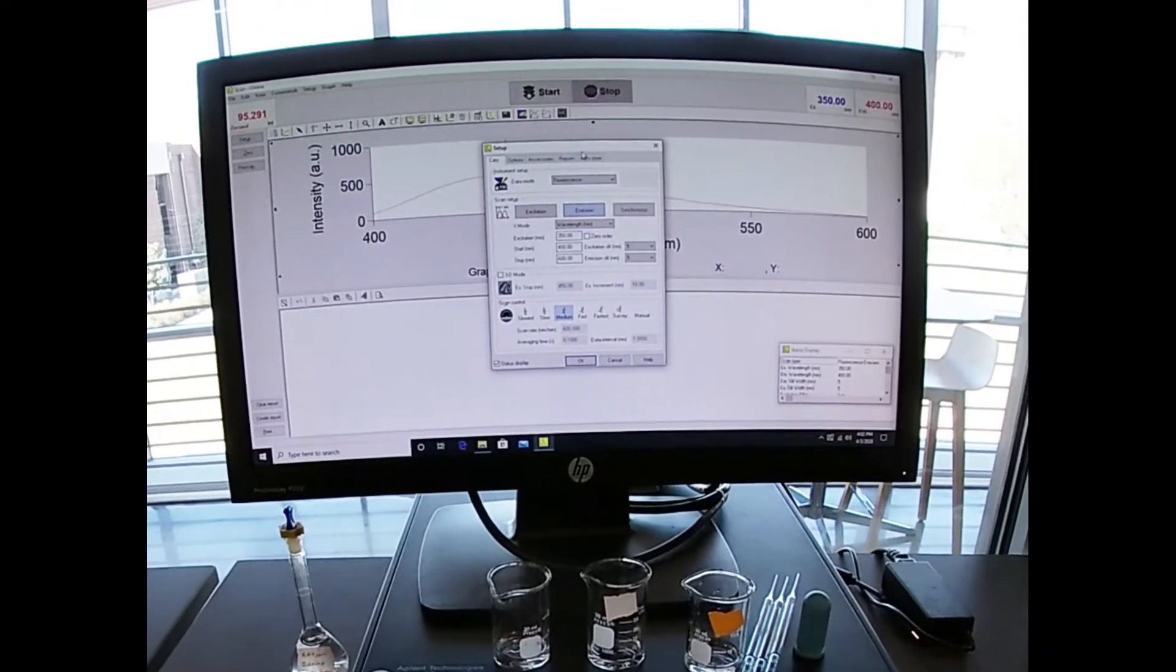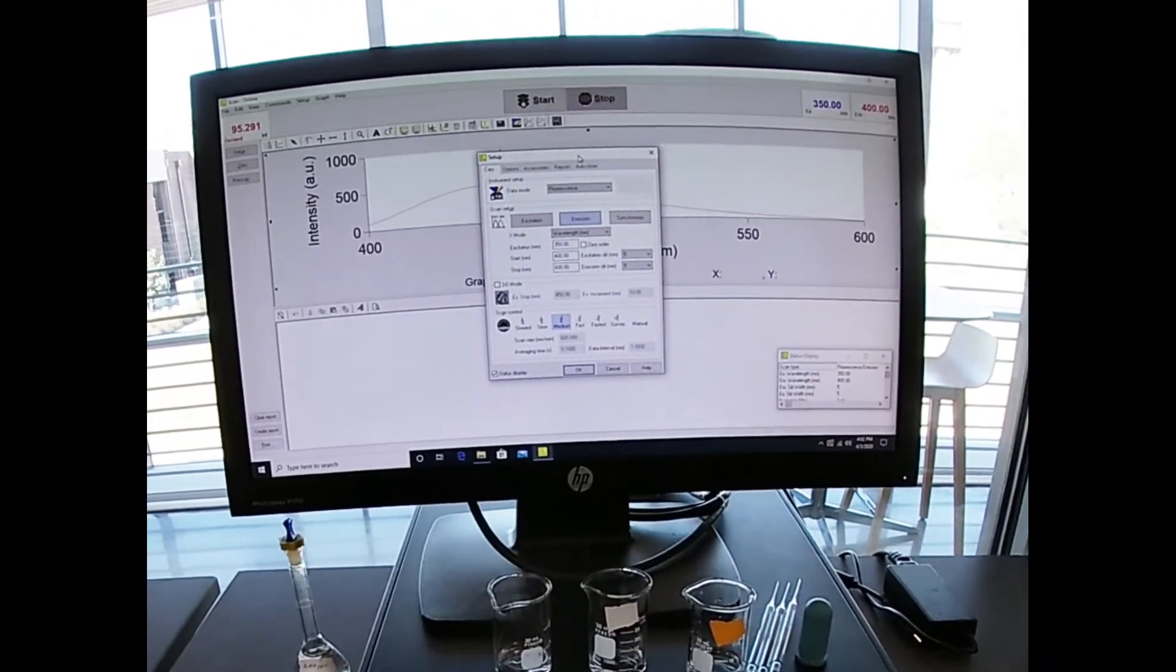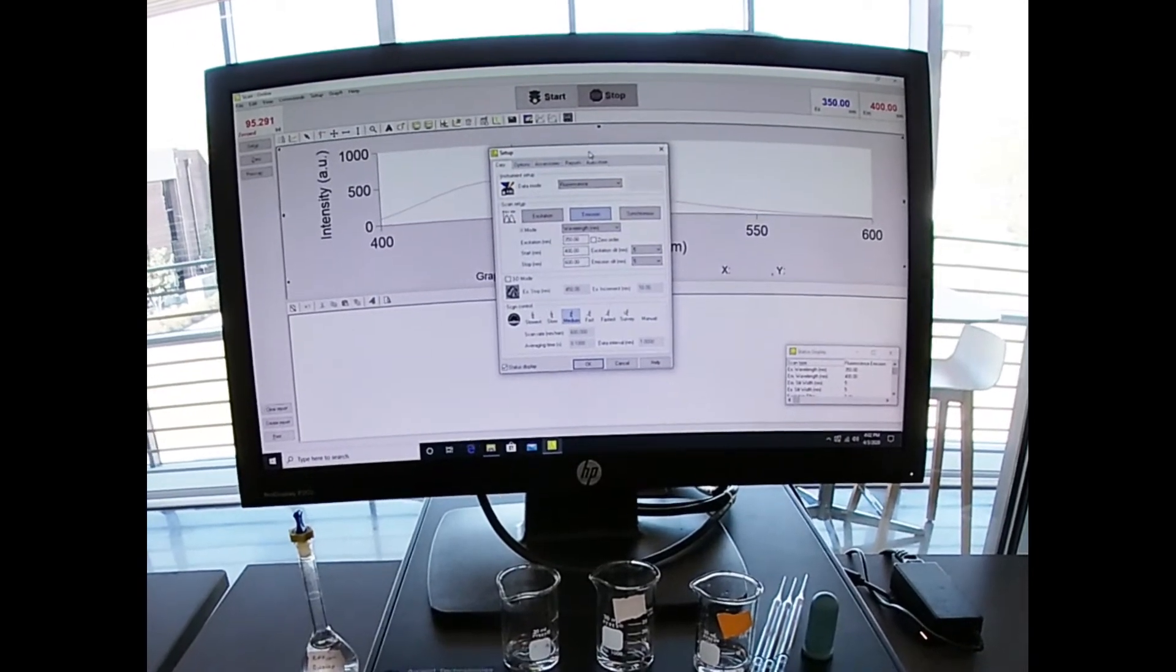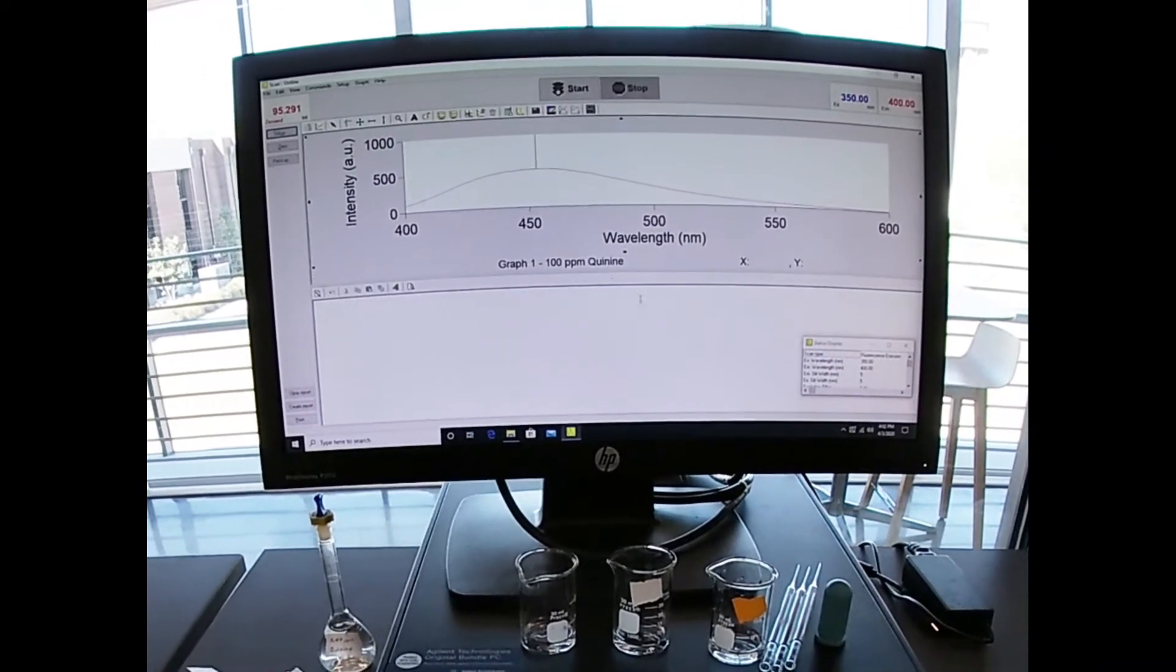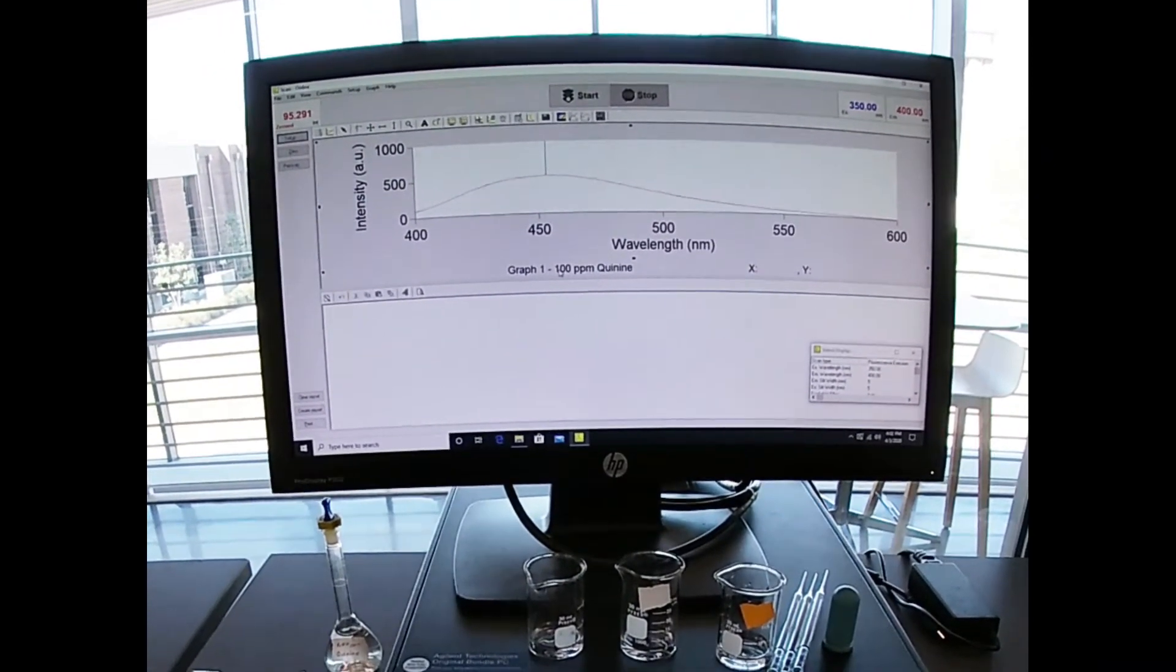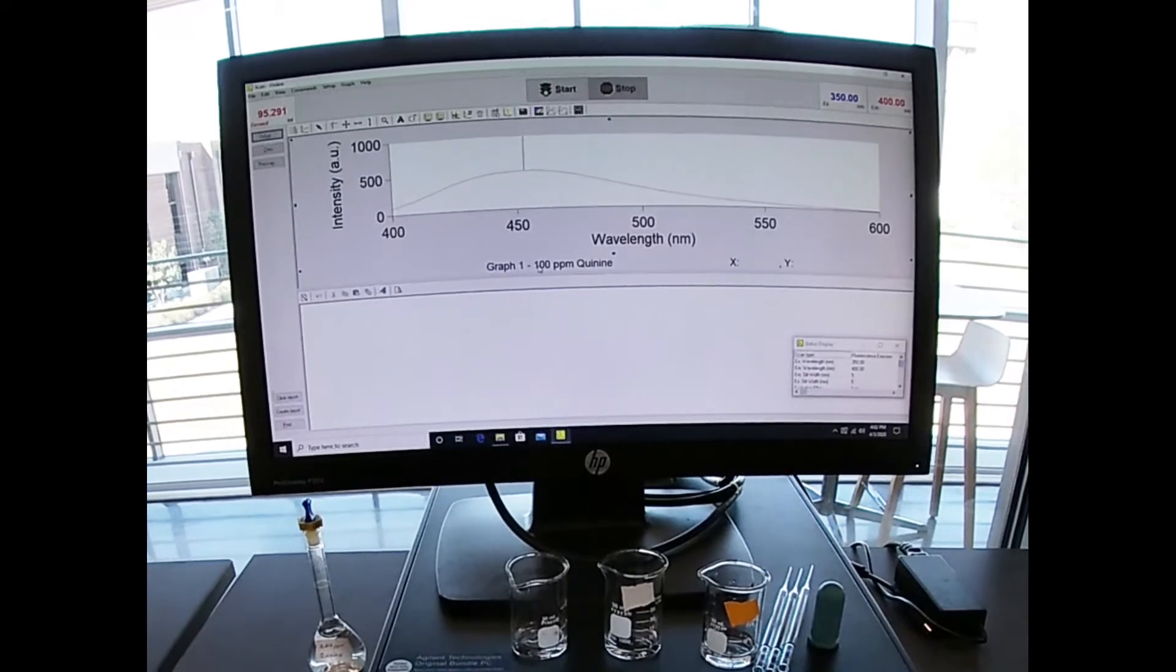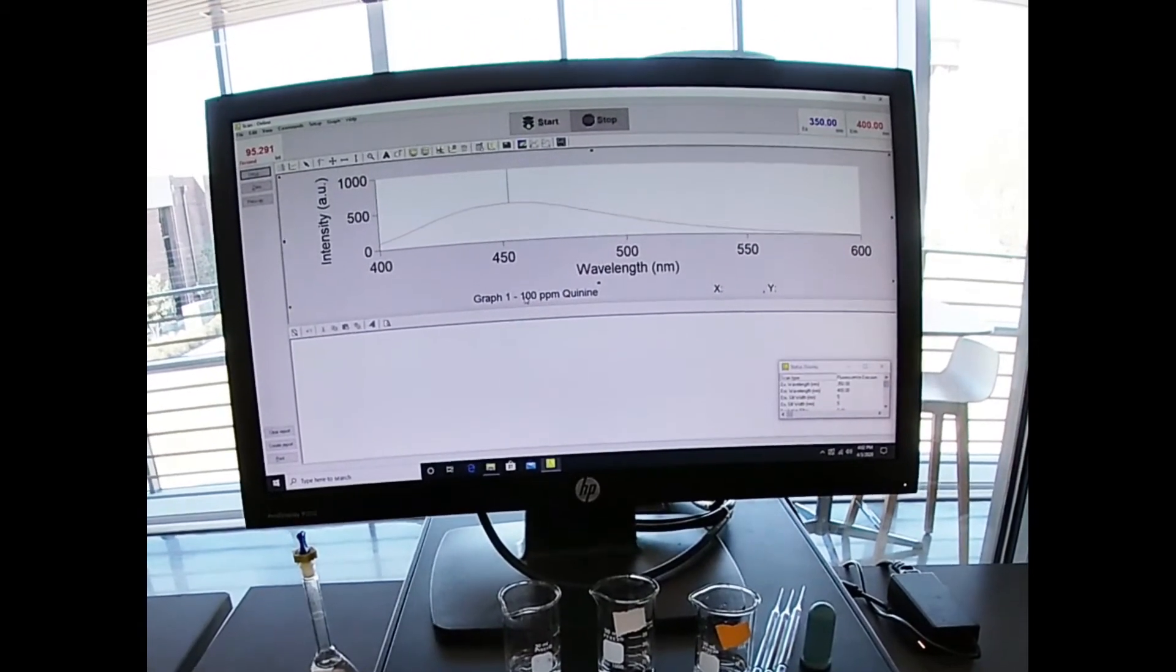The lab manual suggested using 445 nanometers. I've done a preliminary scan using the one ppm quinine solution, and we're actually seeing that most of the fluorescence is right around 455 nanometers.